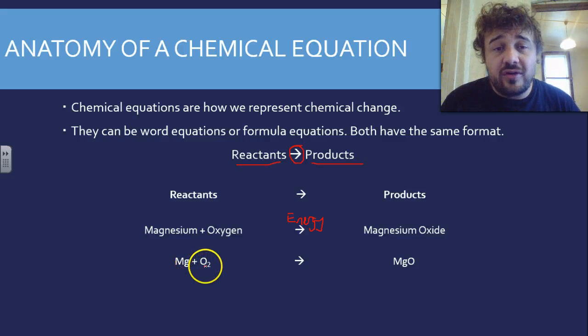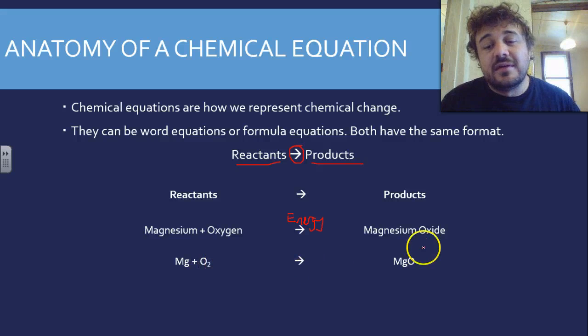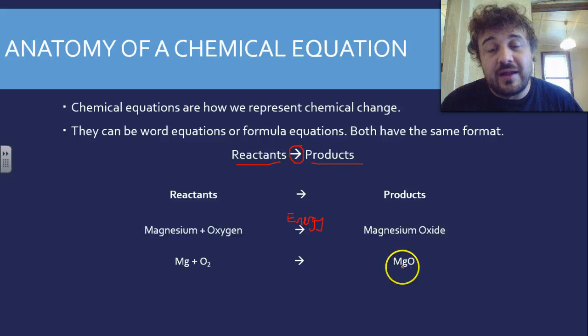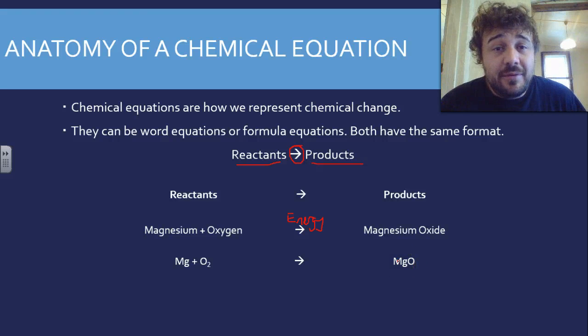Plus two oxygen atoms - hence the little two down at the bottom here - gives us a magnesium oxide molecule, which is one Mg and one oxygen. Remember, each element always starts with a capital, and any second letter is lower case.